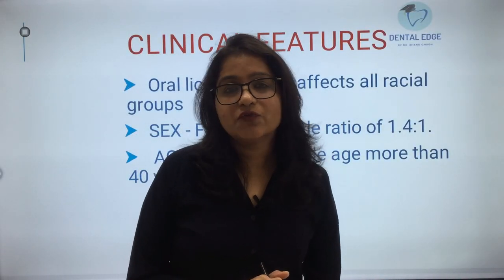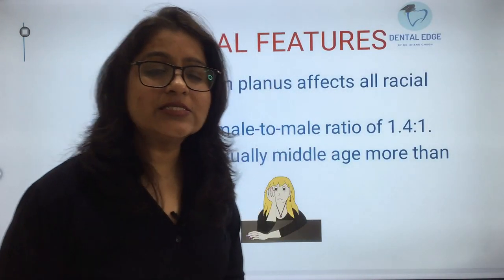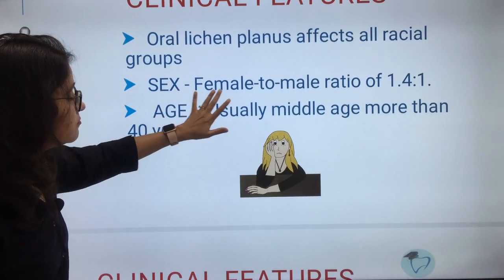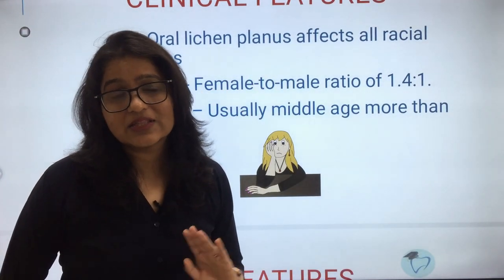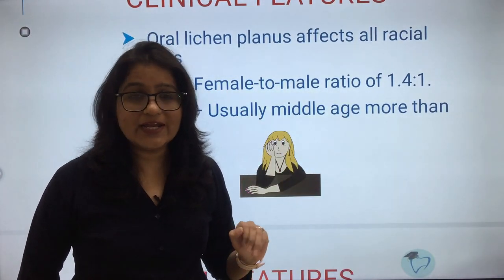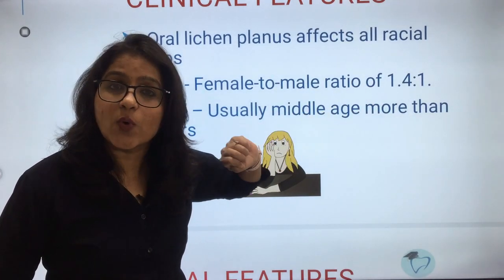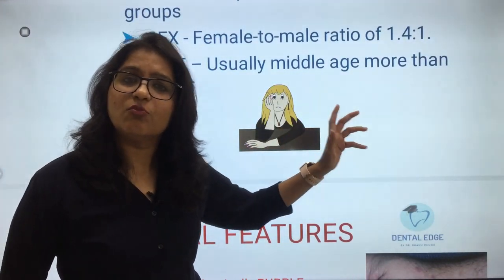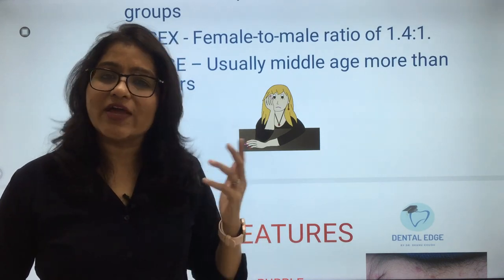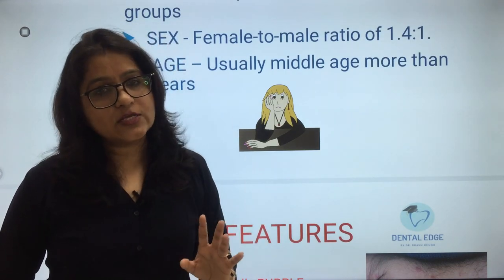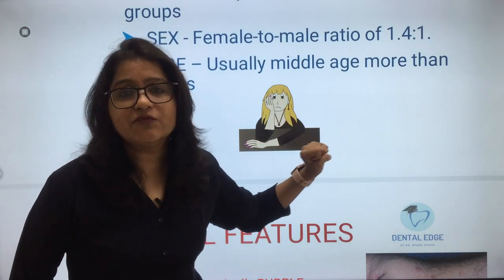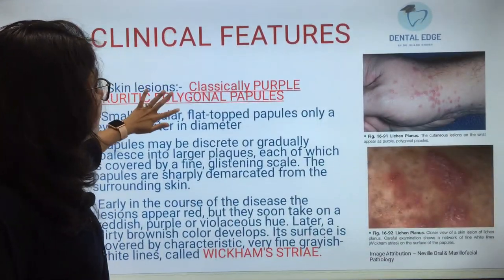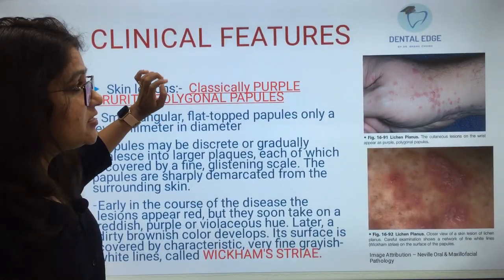Coming to the clinical features of lichen planus: it is more common in females than males, with a ratio of 1.4:1. It usually affects middle-aged individuals, more than 40 years, although it can occur in very young or very old patients.